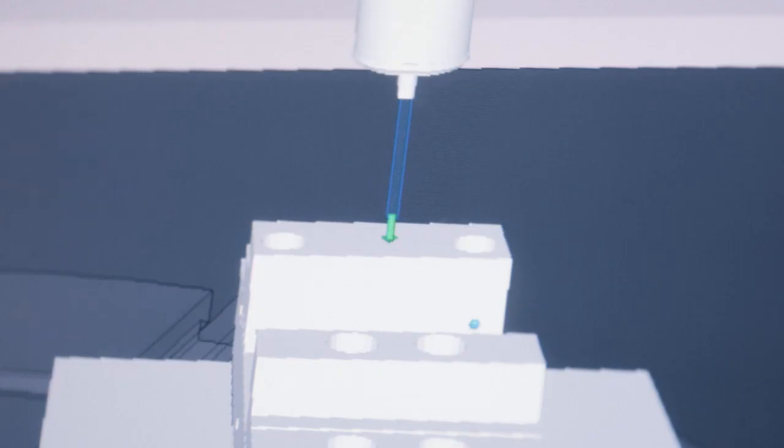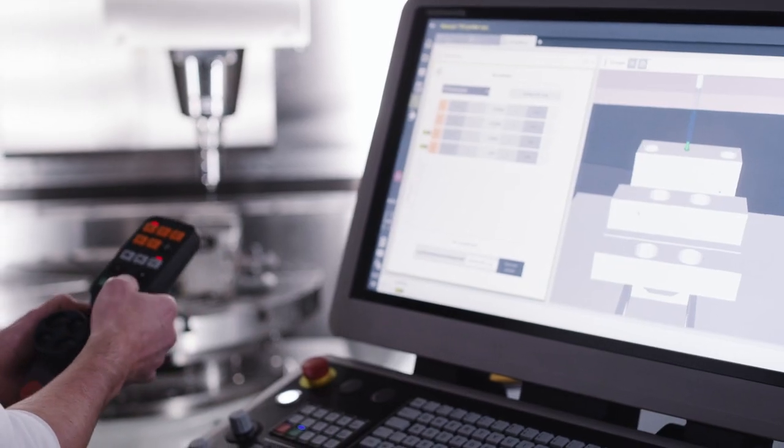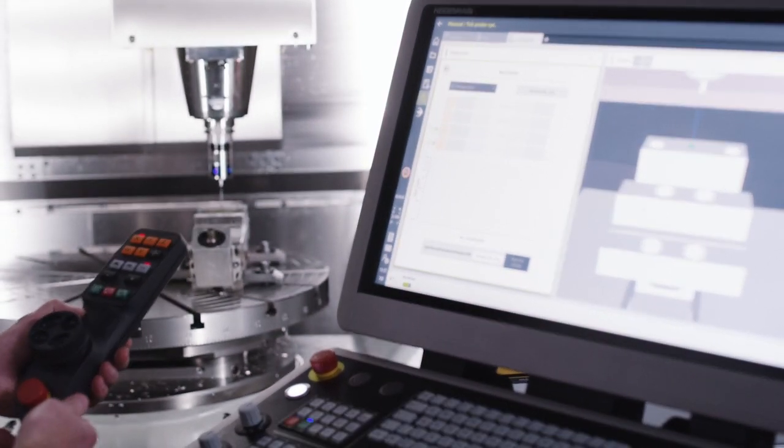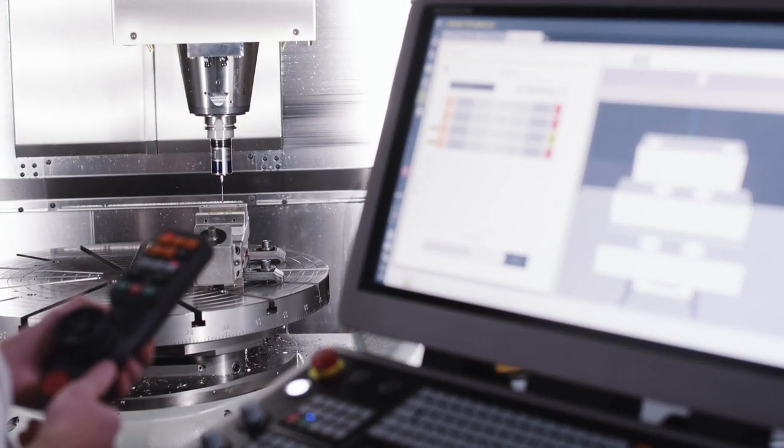Now an arrow appears between the probe tip and the vise. The arrow turns green and when I press NC start, the machine probes the vise in the direction of the arrow.